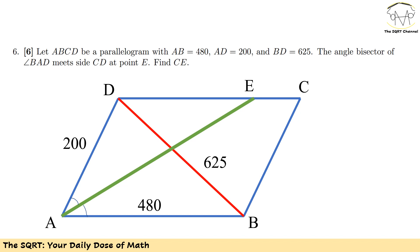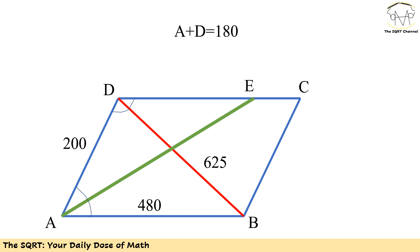Now based on that we are going to find CE here. Since we have ABCD as a parallelogram, sum of A and D is going to be 180 degrees.